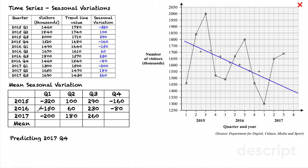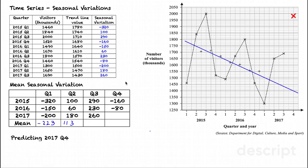I want to find a mean seasonal variation for Q1, so I take the values for Q1, add them up, and divide by 3. That gives me minus 223 — I'm expecting a negative value since they're all negative. I do the same for the quarter 2 values: adding the three of them together and dividing by 3 gives 113. For the quarter 3 values, adding together and dividing by 3 gives me 260. For quarter 4 I only have two values, so I add them together and divide by 2, giving me minus 120.